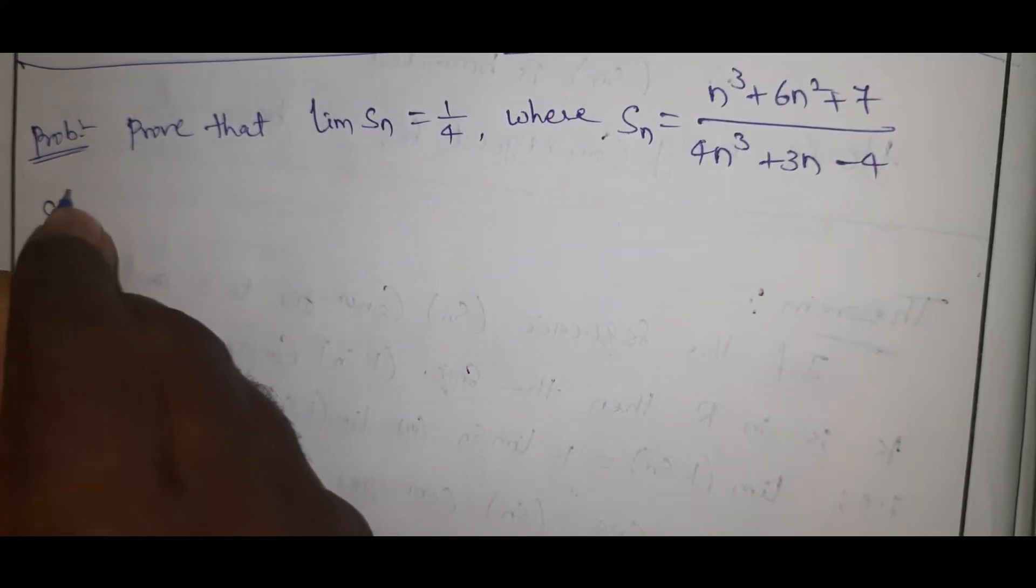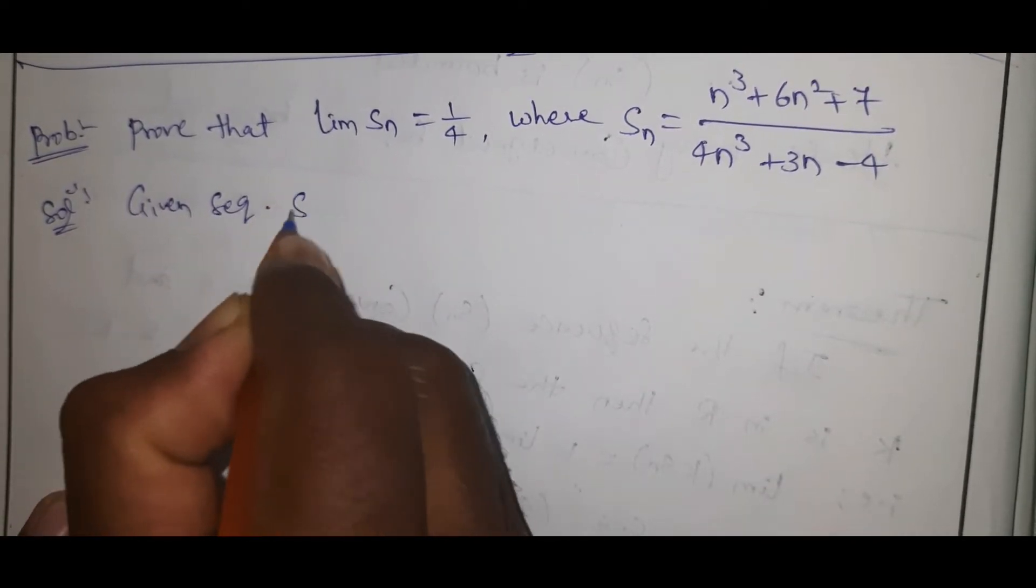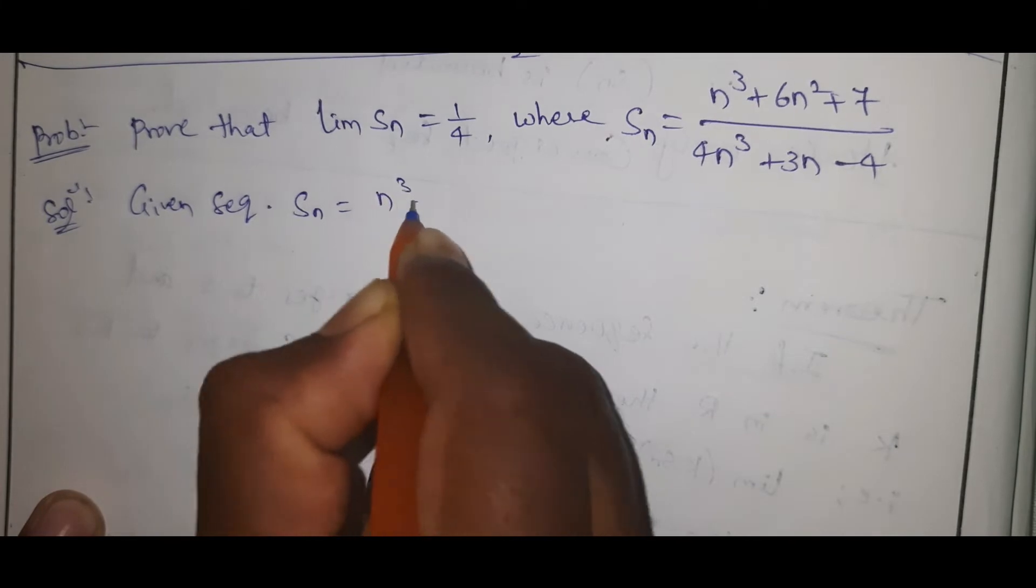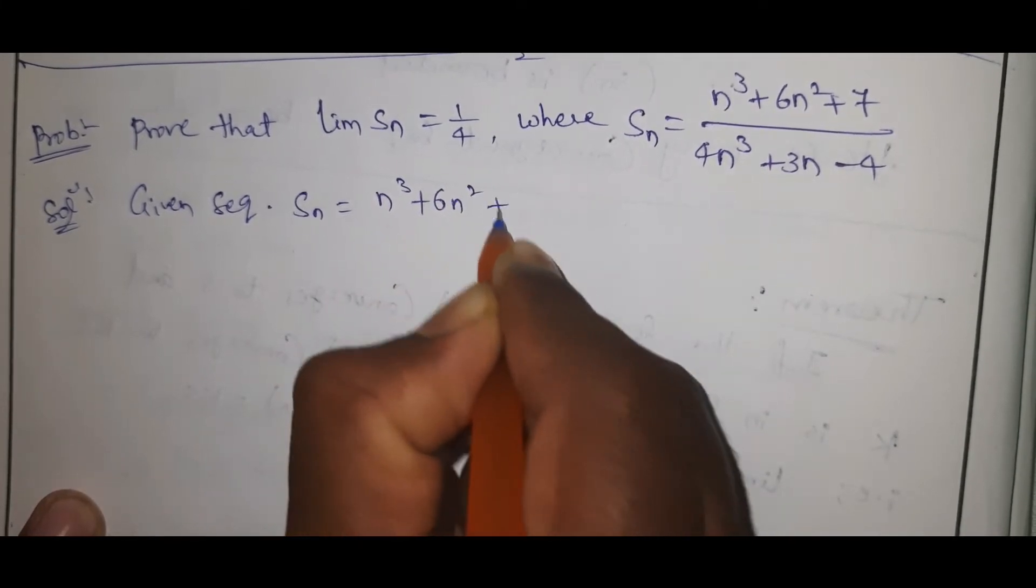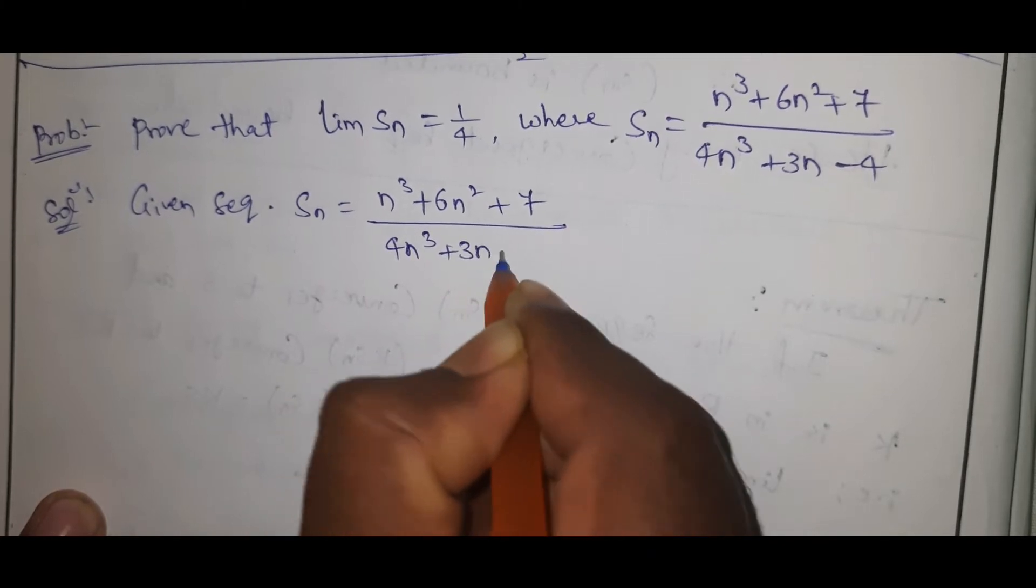Now see here the solution. Given Sequence Sn equals n cube plus 6n square plus 7 by 4n cube plus 3n minus 4.